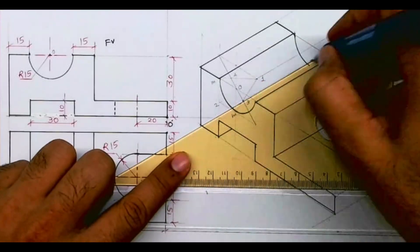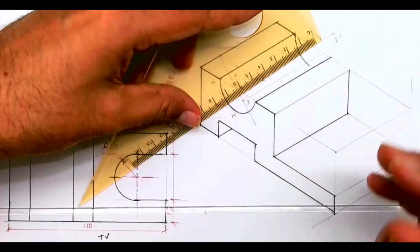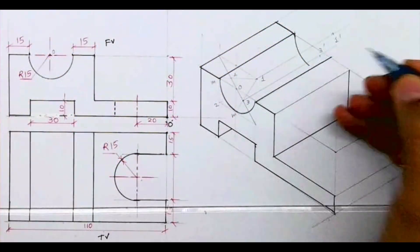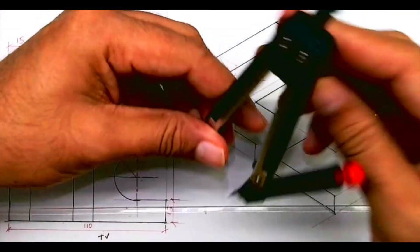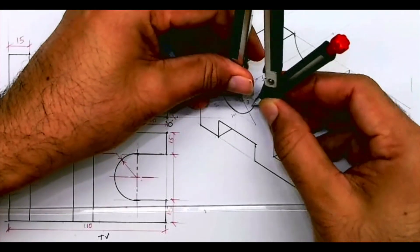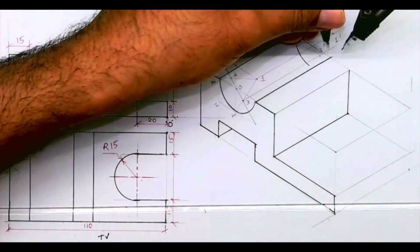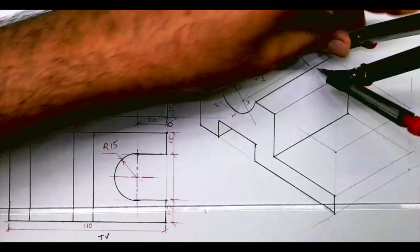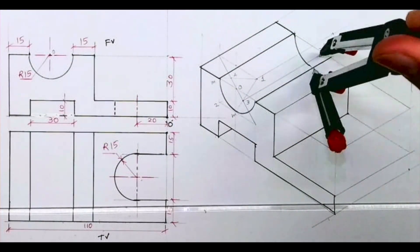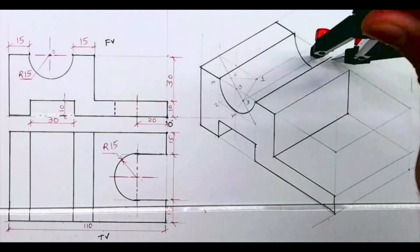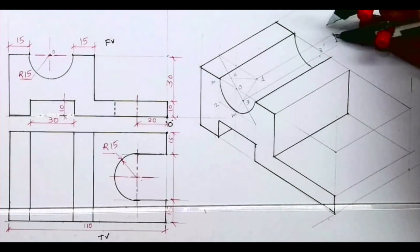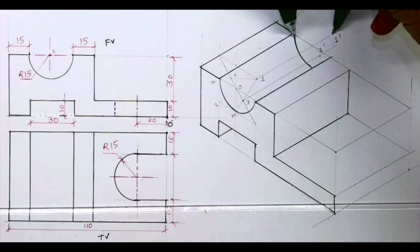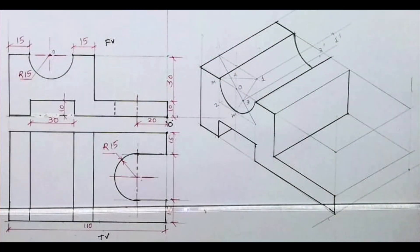Then from point 3, go behind by 60 — this is 3-dash. Take this radius and from 3-dash draw the curve. It will only be this much visible; the remaining portion will be behind so we can't show that. So we have completed the behind circle.